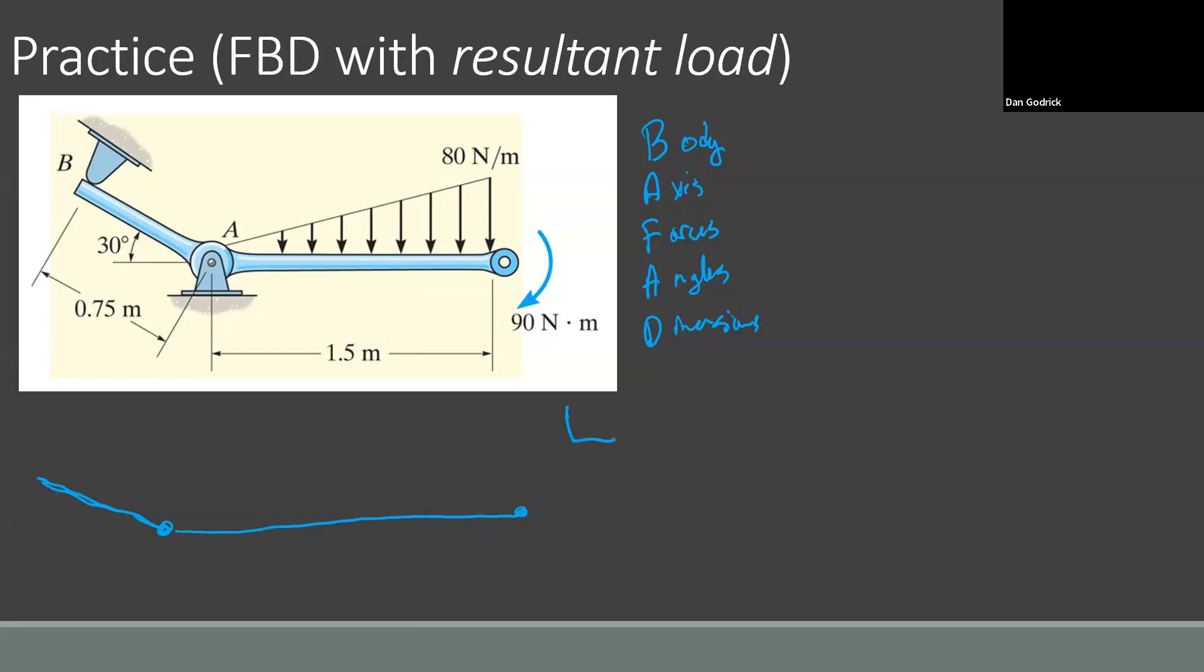There we go. We draw our axis, x, y. We draw our forces. All right, so we have a normal force, call it BN. We have a pin reaction. We'll call it Ay and Ax. We have our moment. So forces are moment. So that's Newton meters.